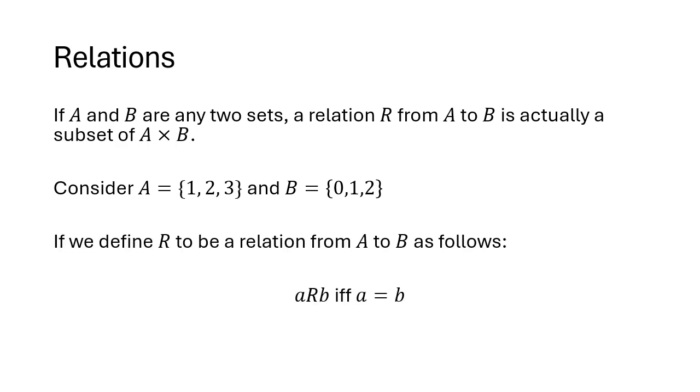We define the relation R, capital R, from A to B as follows: we write aRb. This reads 'a is related to b' if and only if a equals b. The order here matters: the small a is from the set capital A and the small b is from the set B. So a is related to b if and only if the two are equal. Which elements from the sets A and B are equal? It will only be the numbers 1 and the numbers 2.